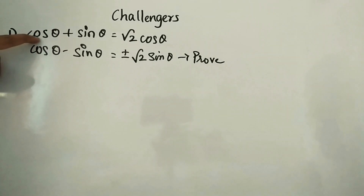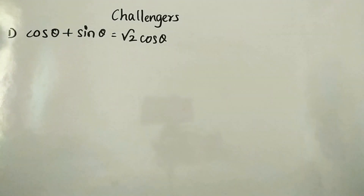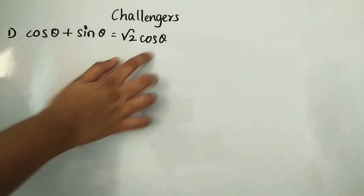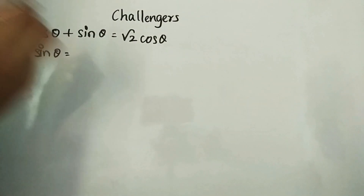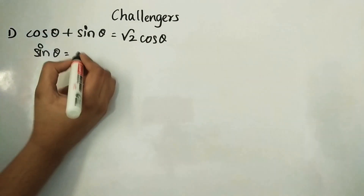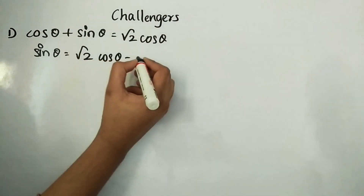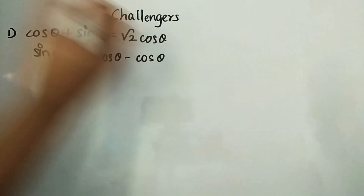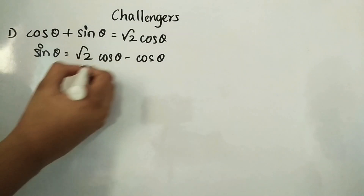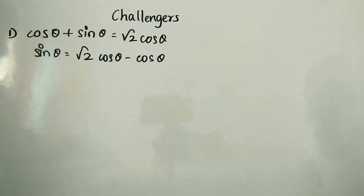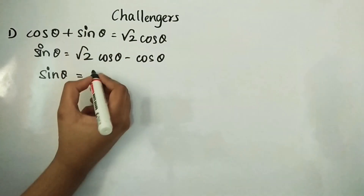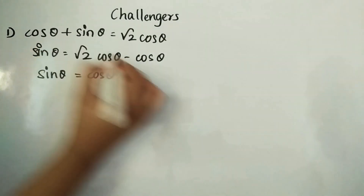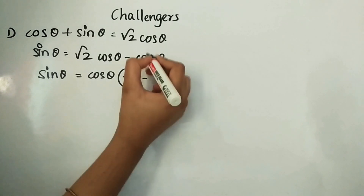First we take the given equation. What we will do is send cos θ to the RHS. At that time, sin θ will be equal to √2 cos θ − cos θ. Now what we can take as common is cos θ. So we write sin θ = cos θ (√2 − 1).